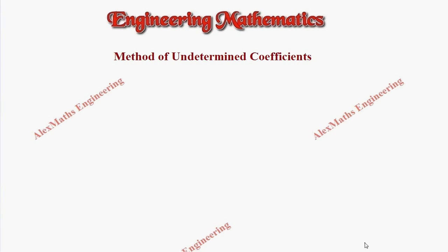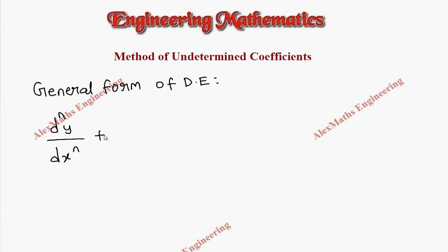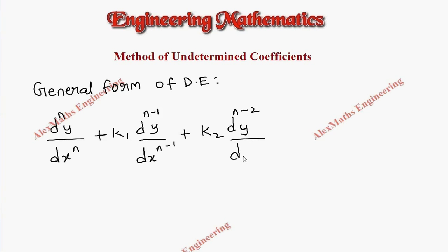Hi students, this is Alex here. In this video, we will discuss the procedure of how to use the method of undetermined coefficients to solve a differential equation. Suppose there is a differential equation of the general form with constant coefficients: d^n y/dx^n plus k1 times d^(n-1) y/dx^(n-1) plus k2 times d^(n-2) y/dx^(n-2) plus dot dot dot plus kn times y equals some function.